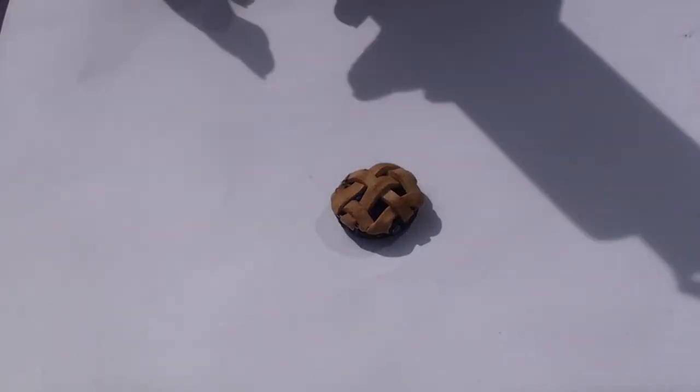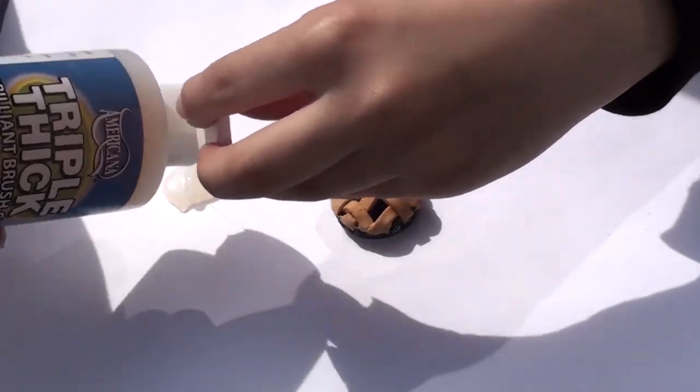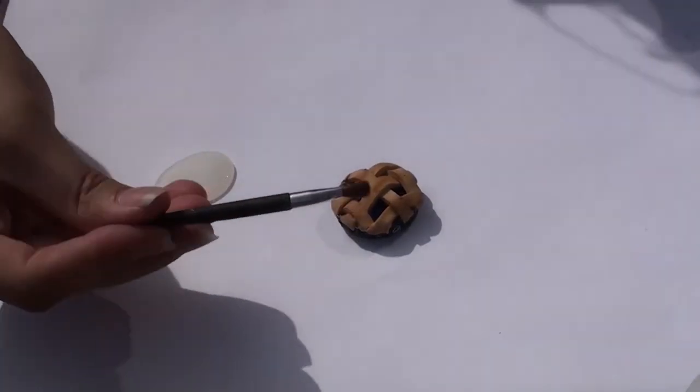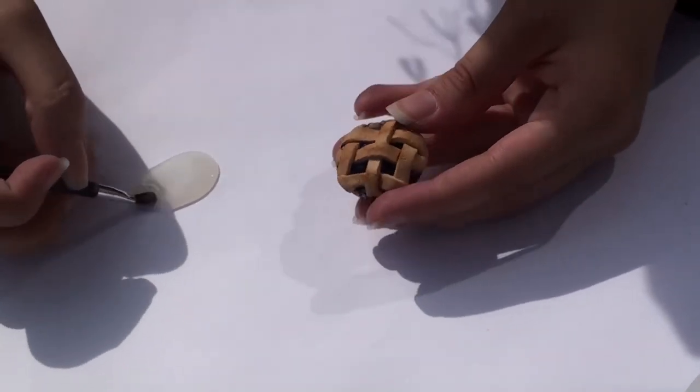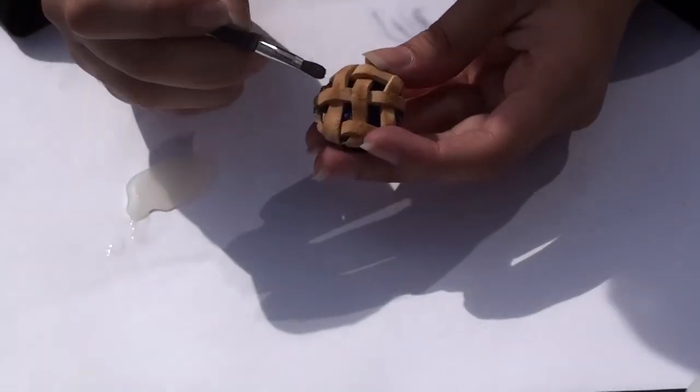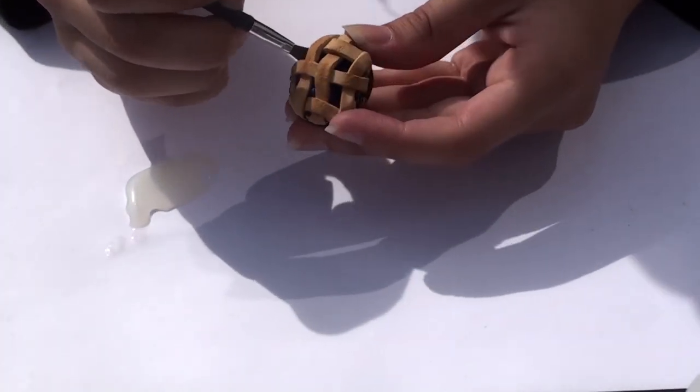Once the clay is out of the oven and has cooled down, it's time to glaze. I'm using the brand Triple Thick, which I use for all of my clay creations. Using a small brush, glaze only the inside of the pie to make the filling look shiny and juicy.